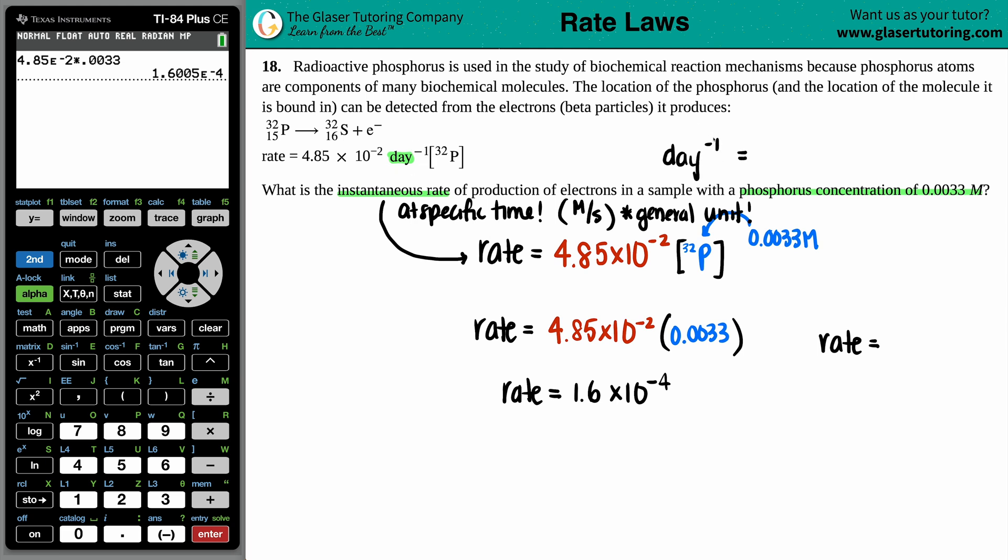And anything that has a negative exponent just means that it's in the denominator. So this day is technically in the denominator. So the rate would be one over day times this value, the molarity. And these units can't cancel out, right? A molarity is not the same as day. So in this case, you have to just string them along. Remember that the molarity is in the numerator. We can always make this molarity over one. And if you're multiplying by fractions, the numerators get multiplied together and the denominators get multiplied together.